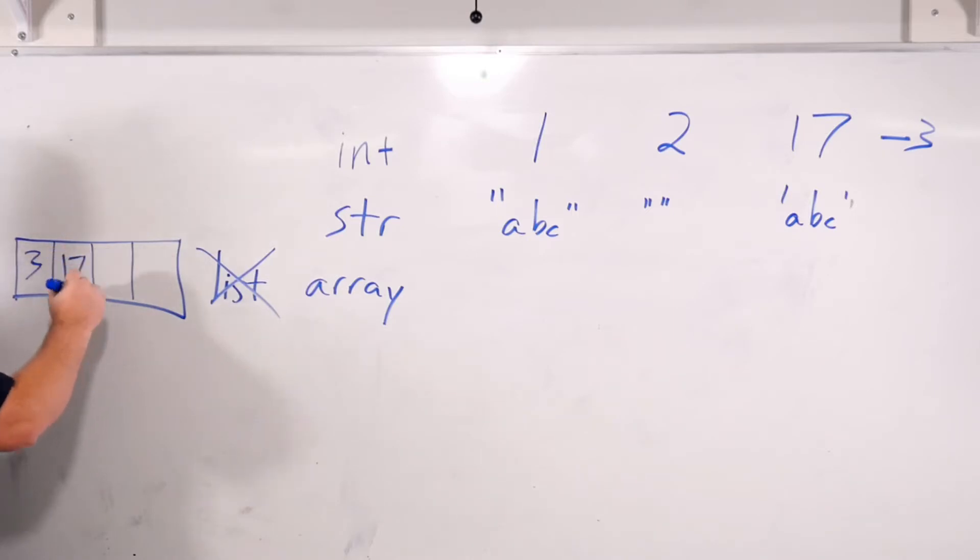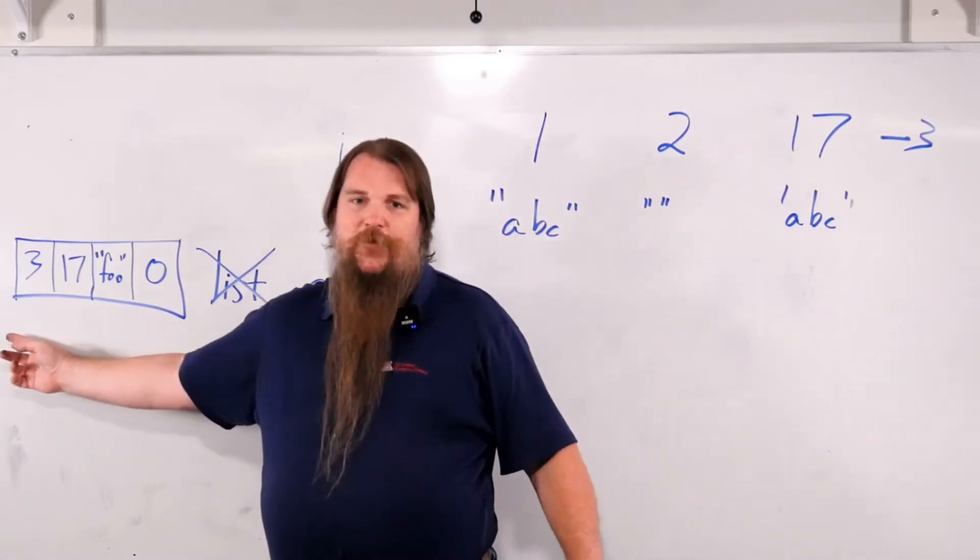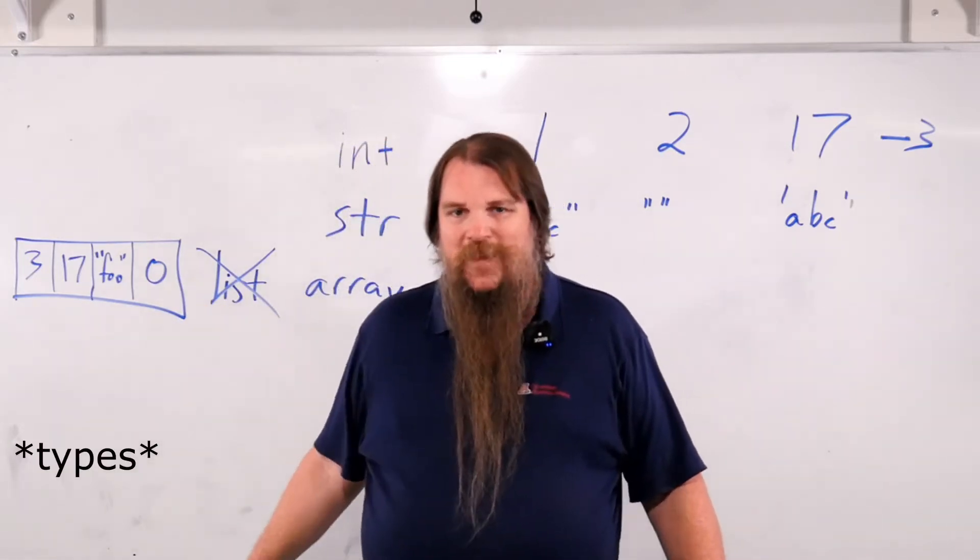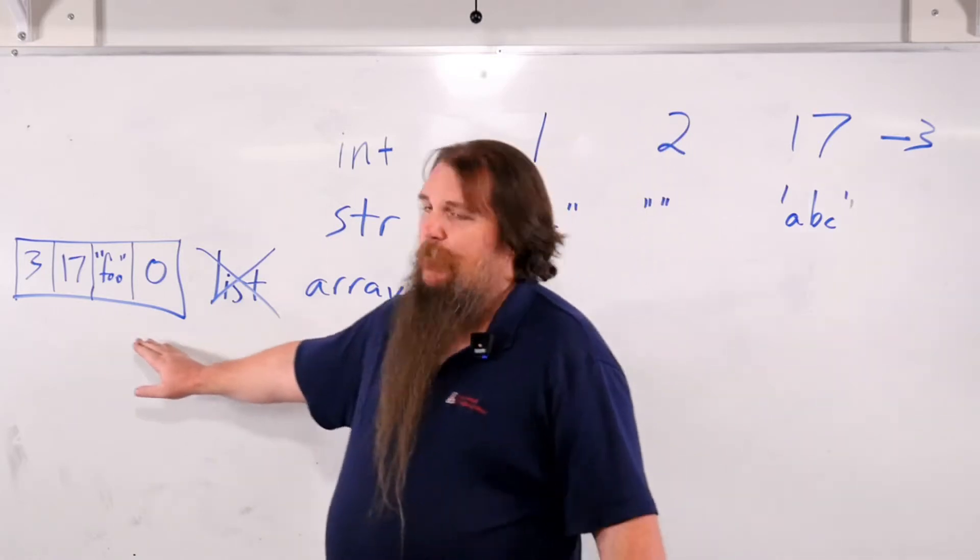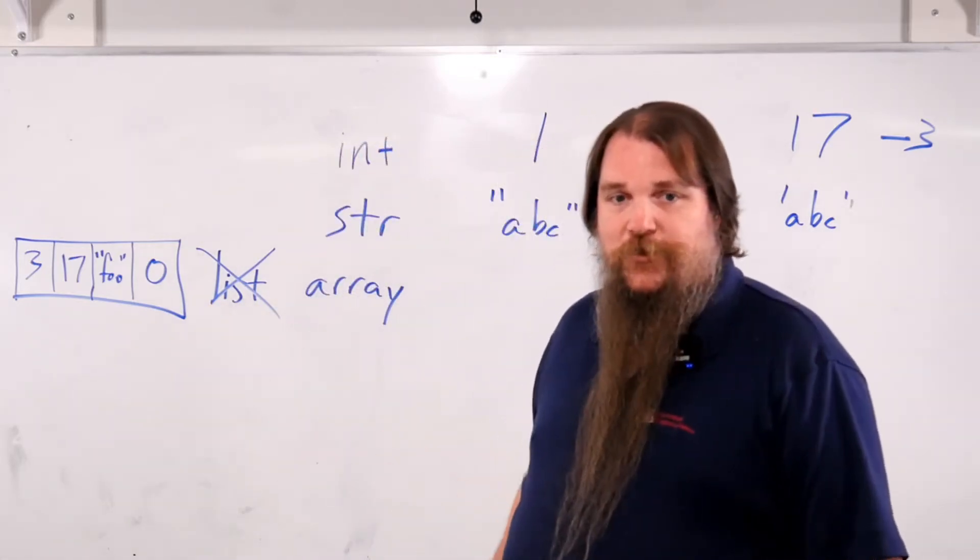3, 17, I'll put the word foo in here and this can be 0. One of the things to notice about Python arrays as I did here is that it is possible to store a mix of different values inside an array. Depending on your program design, it might or might not be a good idea, but Python is perfectly comfortable with you doing it.